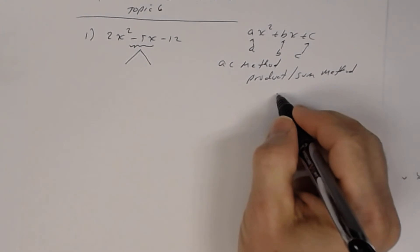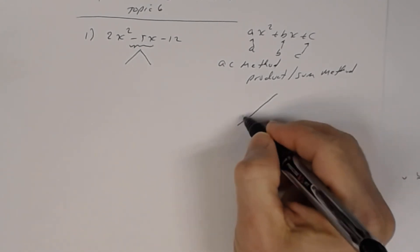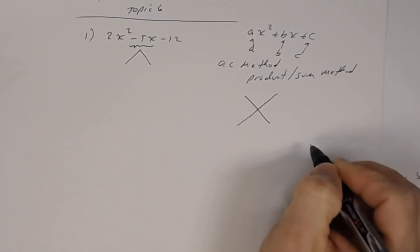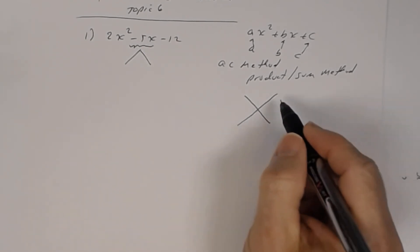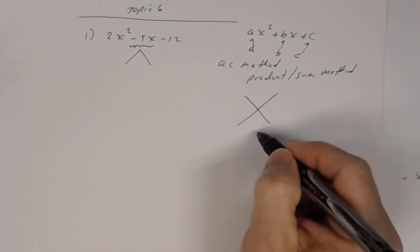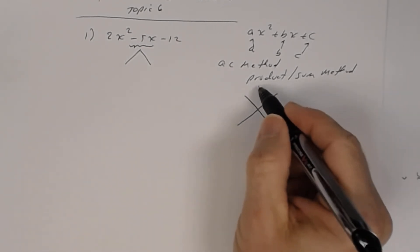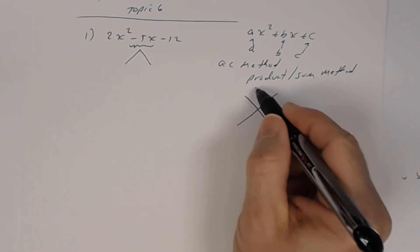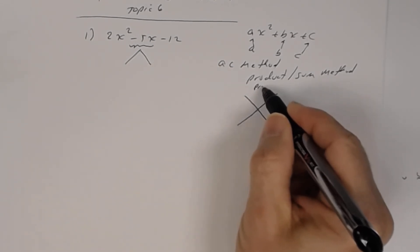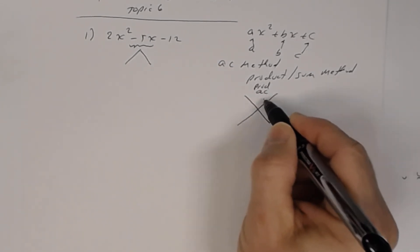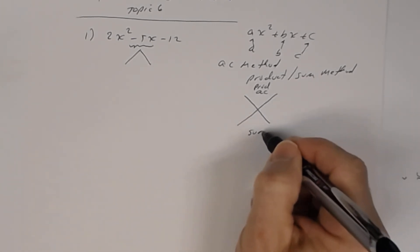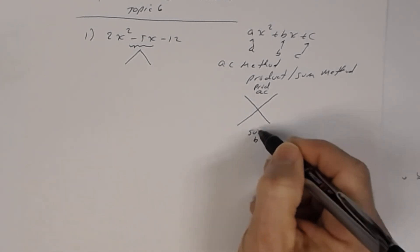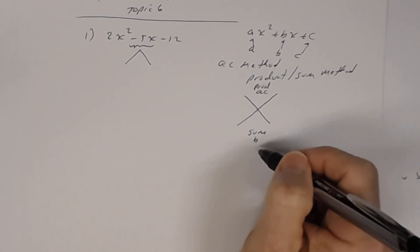I'm going to use an X diagram to go through this process. The X divides the area into four parts. The product, which is AC, goes in the top portion, and the sum, which is b, goes in the bottom portion.